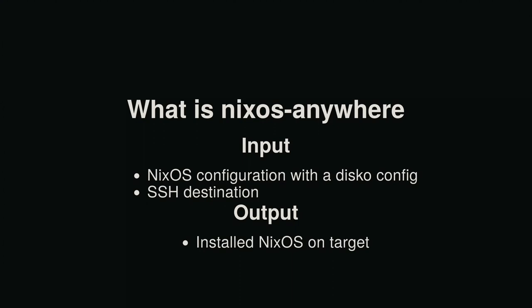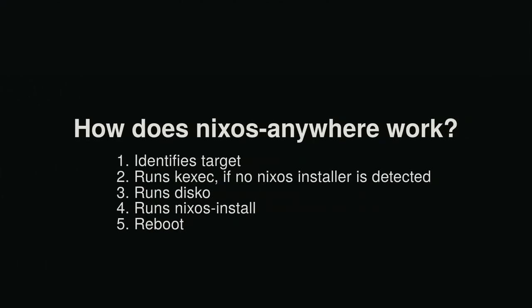This is where NixOS Anywhere came into play. It's a bit like imagining that NixOS install has a remote flag where you can specify a remote server. You have your NixOS configuration with the Disco configuration in there, then you provide an SSH destination, and when you run this command it starts the NixOS installation. Internally: first we log on to the machine, do some checks — like what is the architecture, are we in the NixOS installer already or not? If not, we use a trick called kexec, which loads the NixOS installer into memory. Then we run Disco to do the partitioning, run NixOS install, reboot, and it's done.